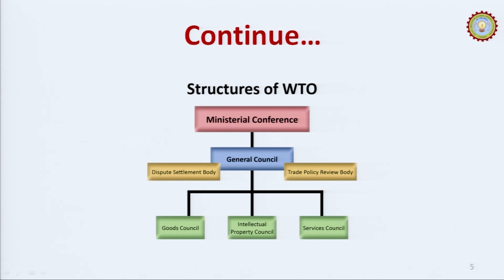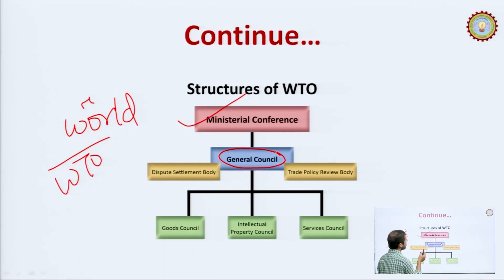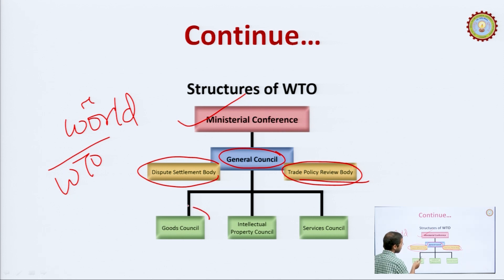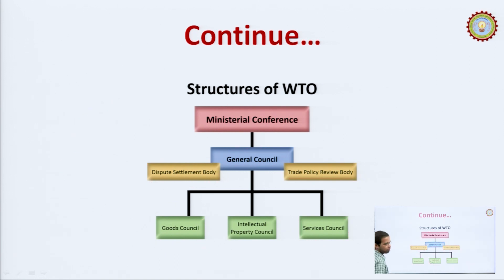Due to this challenge, there is global discussion about replacing WTO with a new body having new rules and regulations. The WTO structure: Ministerial Conference is at the top, then General Council, followed by the Intellectual Property Council and Services Council.